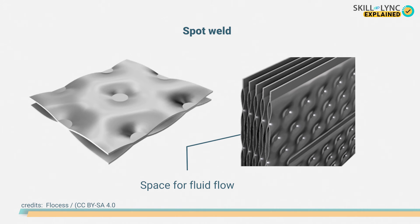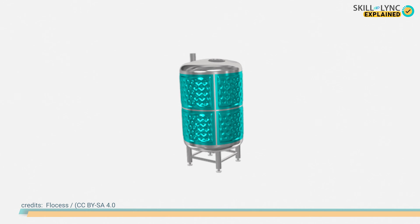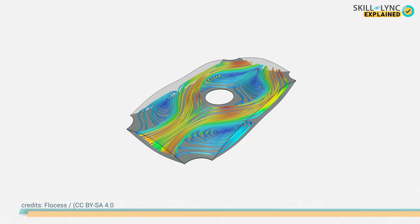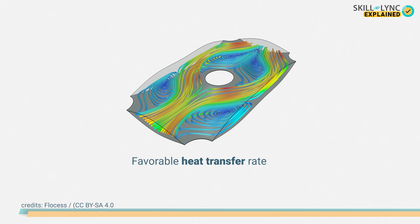Another type is a pillow plate heat exchanger, in which two thin metal sheets are spot welded at regular intervals such that there is space left between the sheets where the fluid can flow. They can be used as an outer covering of tanks for cooling milk. By finite element analysis, it is observed that these types of heat exchangers have a favorable heat transfer rate. Besides, they have great geometrical flexibility as well.